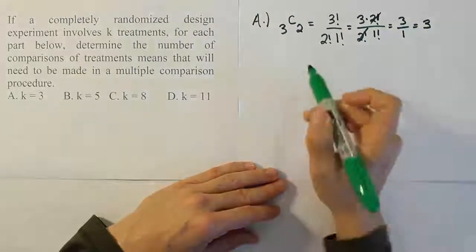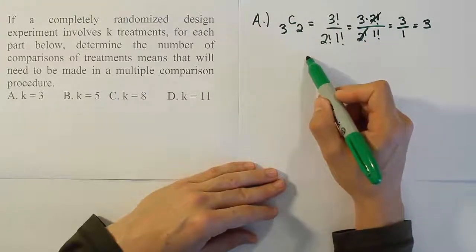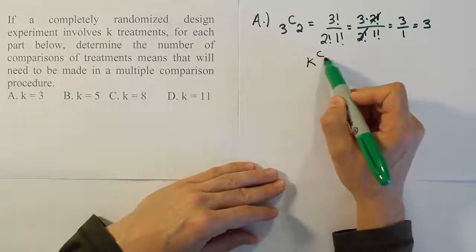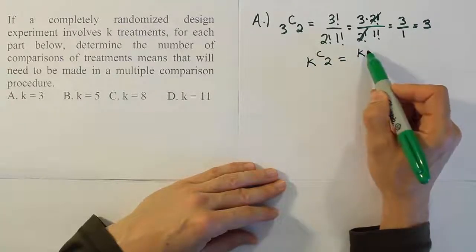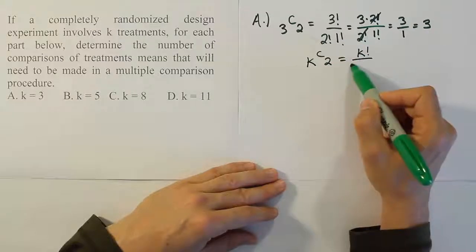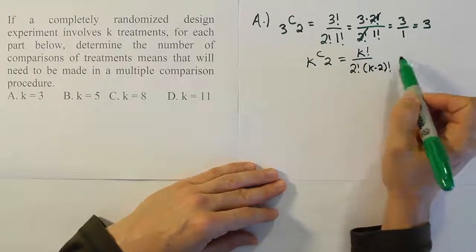Now there's a simpler formula you can use generically. The idea is that anything choose 2 is going to have the following formula: k factorial over 2 factorial times (k-2) factorial.